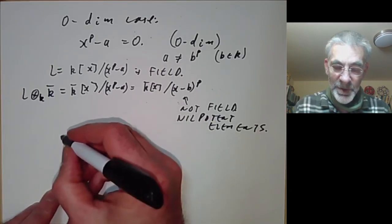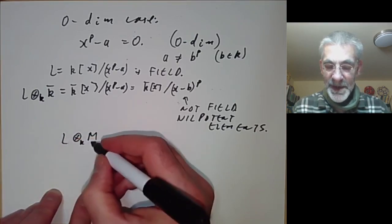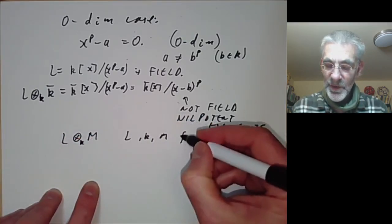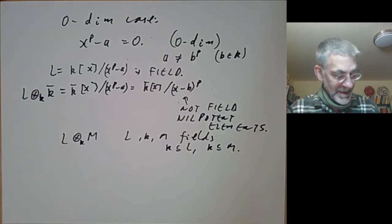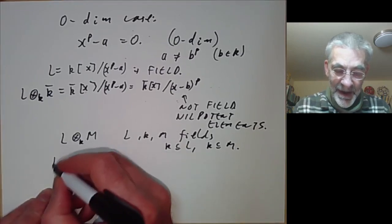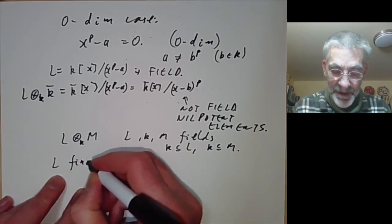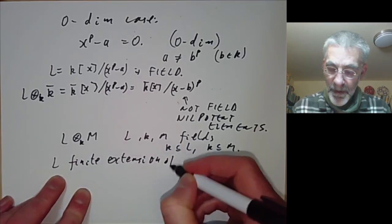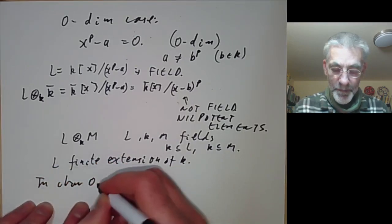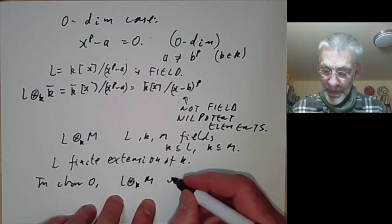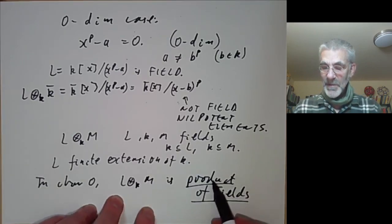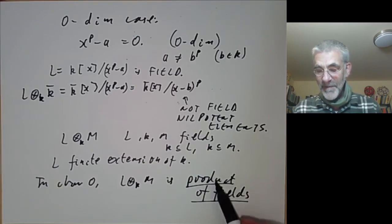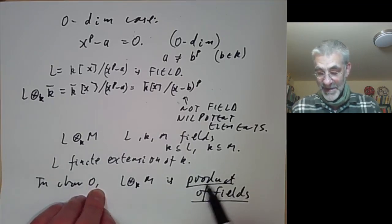Let's look more generally at a tensor product L ⊗_k M where L, k, and M are all fields with k ⊆ L and k ⊆ M, and suppose that L is a finite extension of k. Then in characteristic zero, L ⊗_k M is a finite product of fields, so every point is still going to be regular because its local ring is just a field.